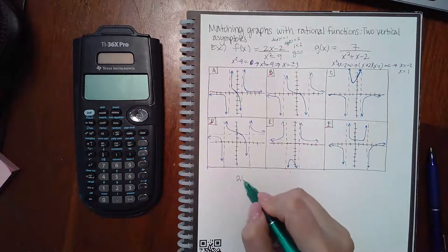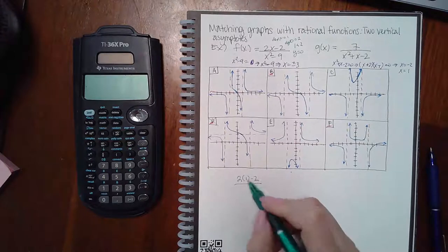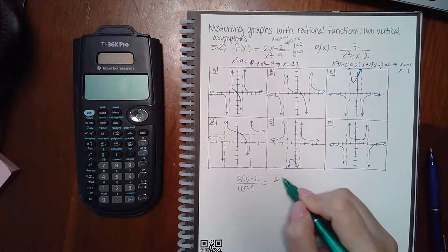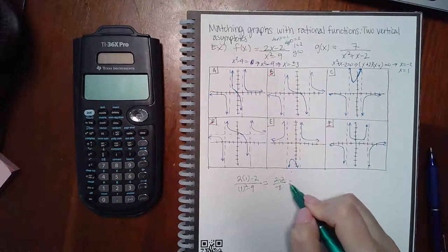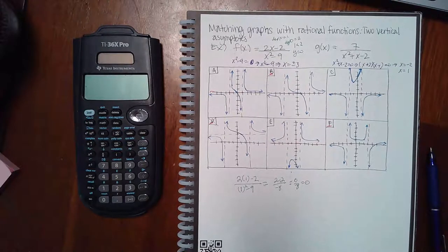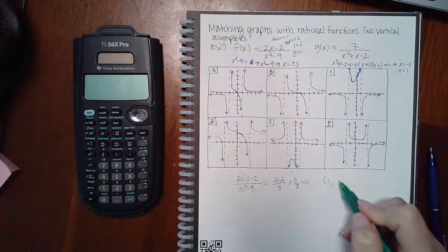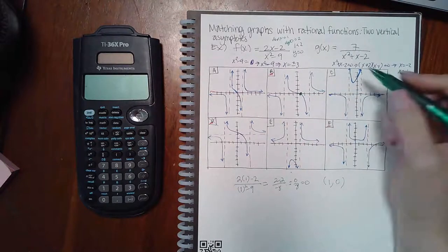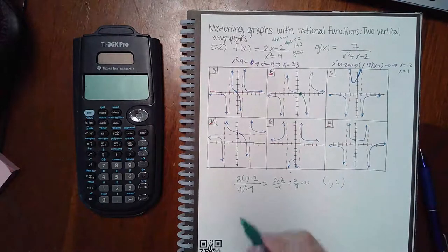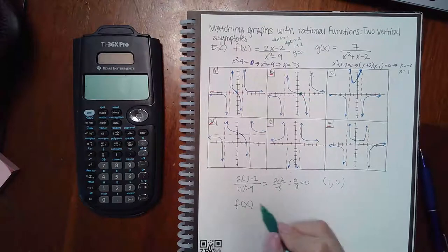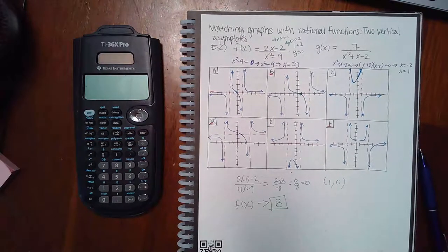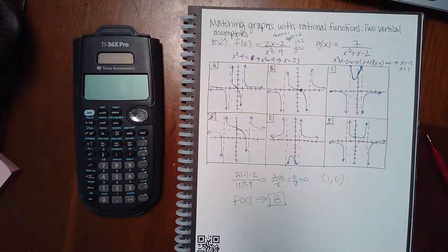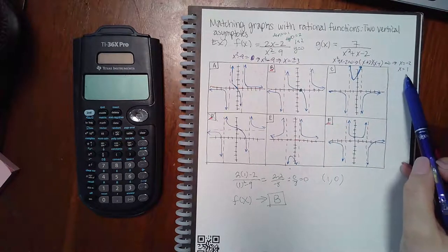Plugging in x = 1: we get (2·1 - 2) over (1² - 9), which is (2 - 2) over negative 8 = 0 over negative 8 = 0. We got y = 0, so the answer for f(x) is graph B.